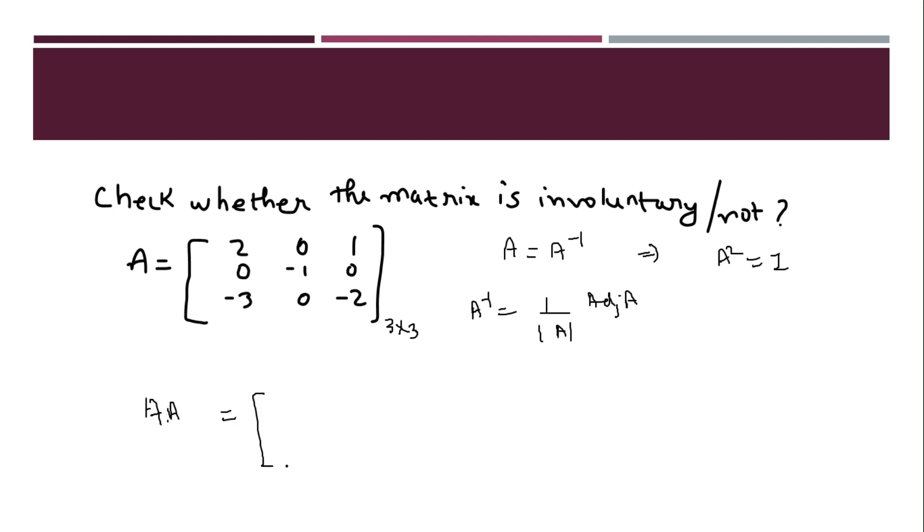Let's find out A square, that is A into A. If it is coming out as identity matrix, then we can say yes, this is an involuntary matrix. This is A, this is A. Multiply them up. First row, first column, 2 to the 4 and minus 3.